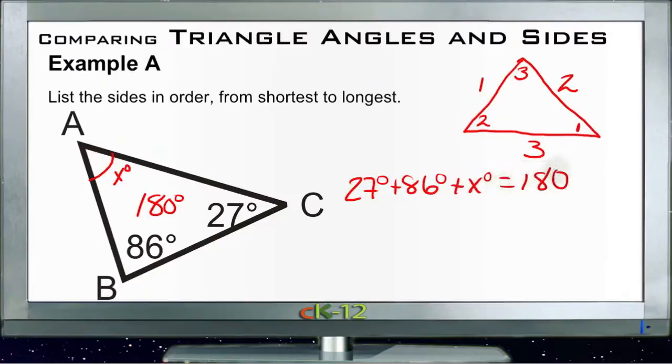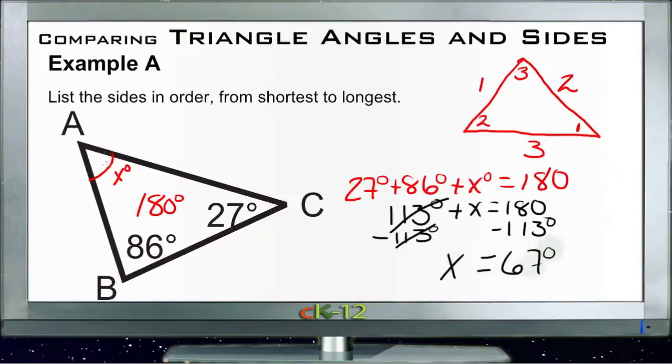If we solve that for x, then we get 80 and 20 is 100, and 6 and 7 is 13, so we have 113 degrees plus x degrees equals 180. Subtract 113 from both sides and 113 will cancel, and we'll get x equals 67 degrees.